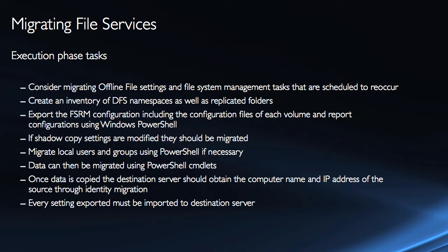Then export the file server resource manager configuration, including the configuration files of each volume and the report configurations. You can do that using the Windows PowerShell commands that are a part of the server migration tools. If shadow copy settings are modified, then they should be migrated over as well — again, a function of the server migration tools.